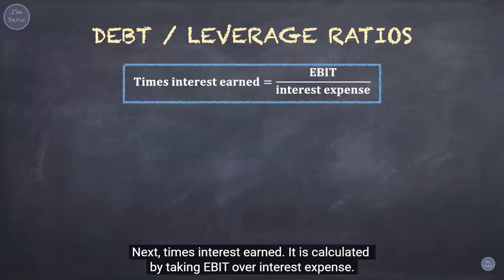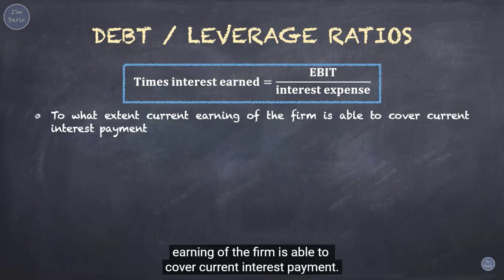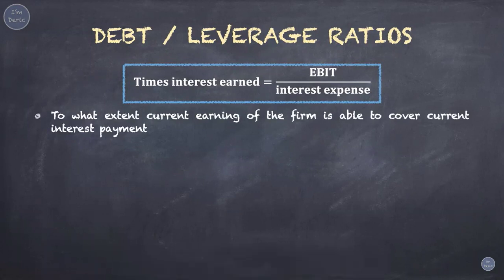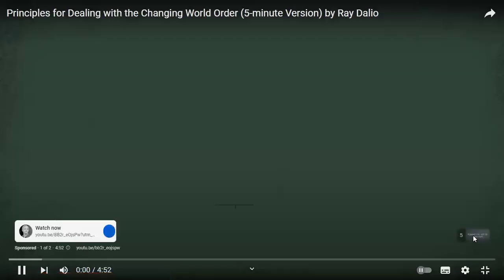Next, times interest earned is calculated by taking EBIT over interest expense. This ratio measures the extent to which current earnings of the firm are able to cover current interest payments — in other words, how many times a company can cover its interest charges on a pre-tax basis.